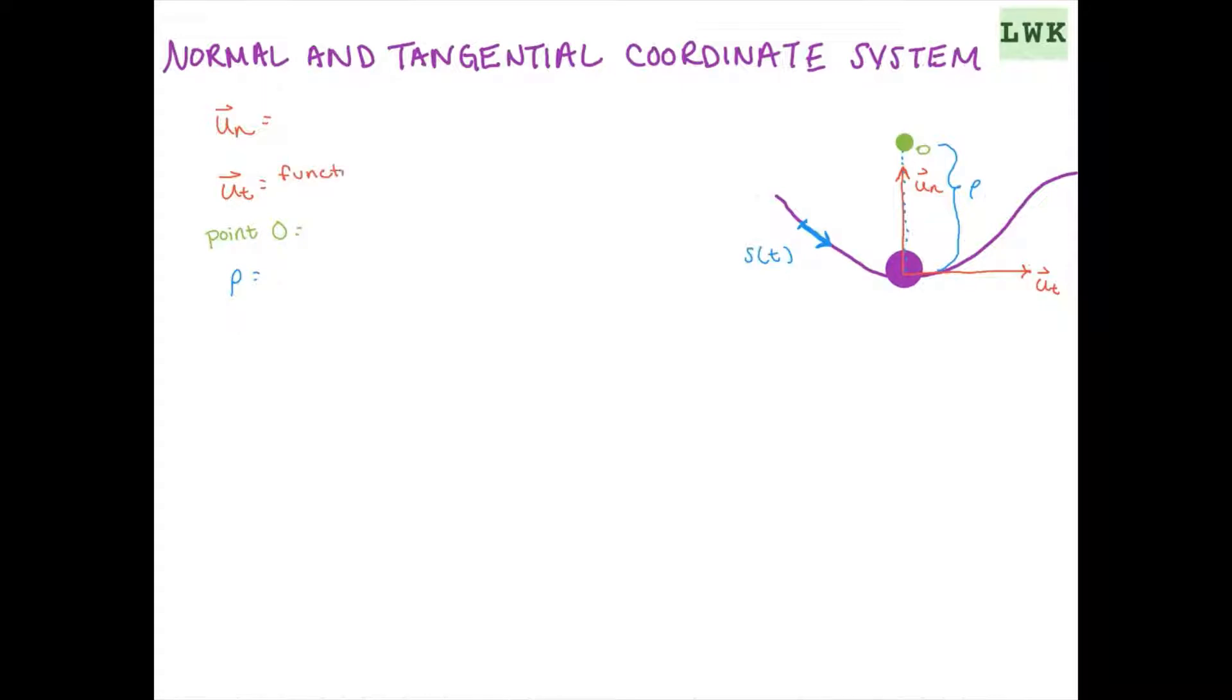So let's start by writing that over here with our definitions. So they're always going to be changing. So now we can say that un is always going to be pointed towards the concave side of the curve. And our ut is always going to be tangent to the path of motion. And it'll also always be 90 degrees from un.